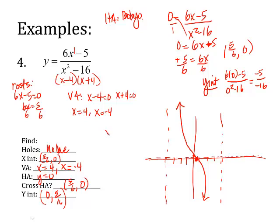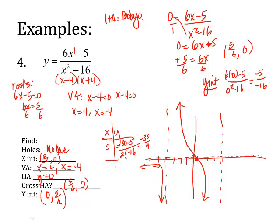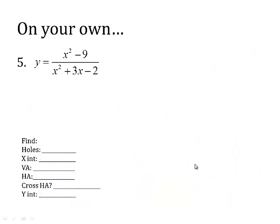I need a little t-table to figure out what's going on at the left and right of the graph. Picking x = −5 on the left: 6(−5) − 5 over (25 − 16) = −35 over 9 — it's negative, so the curve is below the asymptote there. Picking x = 5 on the right: 6(5) − 5 over (25 − 16) = 25 over 9 — it's positive, so the curve is above the horizontal asymptote. Try the practice problem on your own and we'll see how you did in class. Good luck.